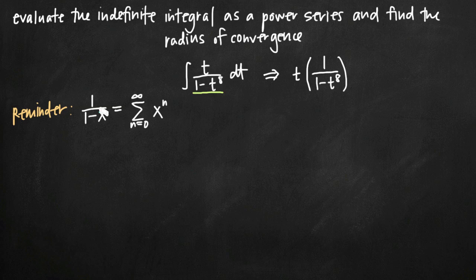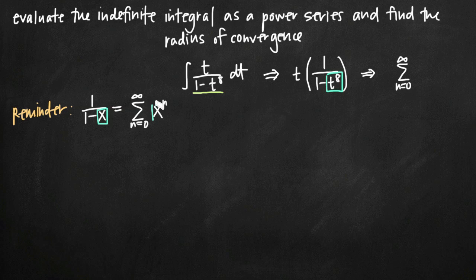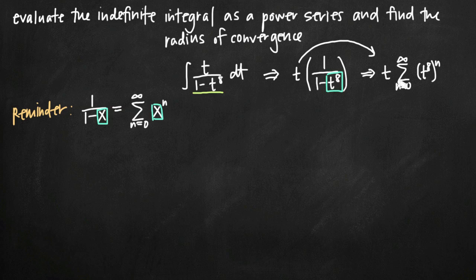Now what we have without the t in front looks even more similar to 1 over 1 minus x. The only difference is that x here corresponds to t to the 8th power, and we have this t multiplied out in front. Those are easy substitutions to make. Our power series representation is the infinite sum from n equals 0 to infinity of x to the n power, and we substitute t to the 8th raised to the n power, then pull the t out in front.